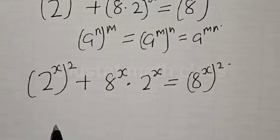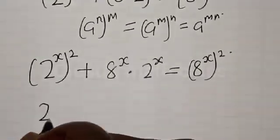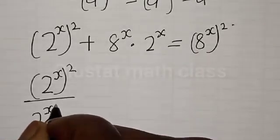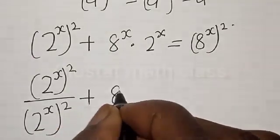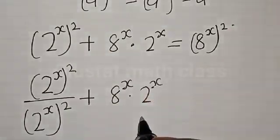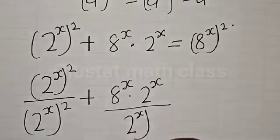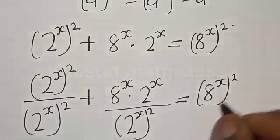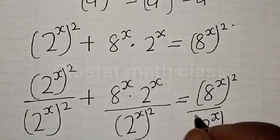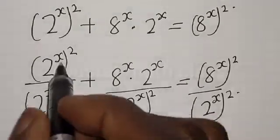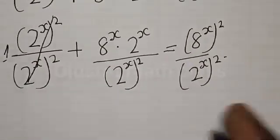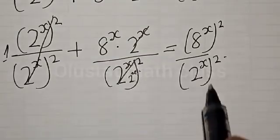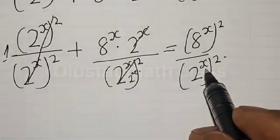Now let's divide everything by 2 raised to power s squared. We have: 2 raised to power s squared divided by 2 raised to power s squared, plus 8 raised to power s multiplied by 2 raised to power s divided by 2 raised to power s squared, is equal to 8 raised to power s squared divided by 2 raised to power s squared. The first term cancels to 1, and we are left with 8 raised to power s over 2 raised to power s, equal to 8 raised to power s squared over 2 raised to power s squared.